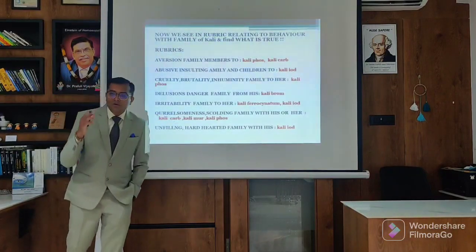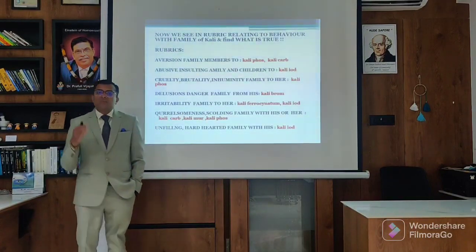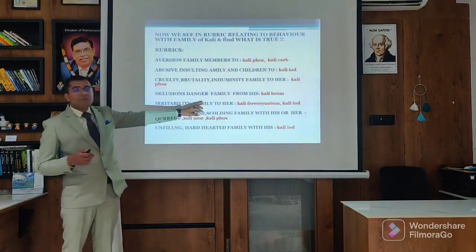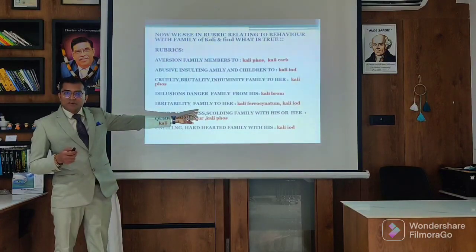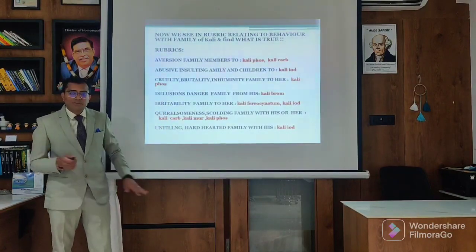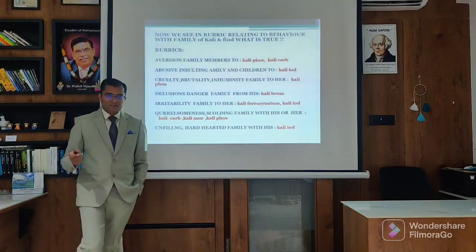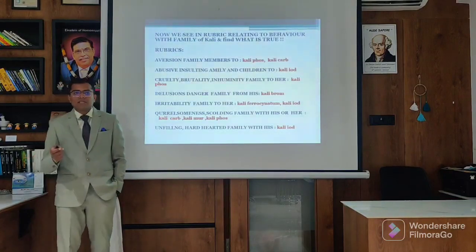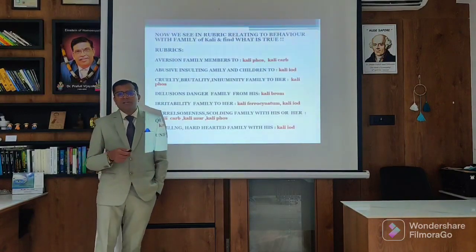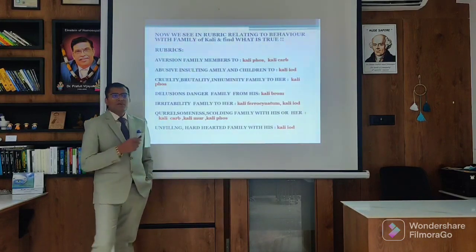All the halogens have the feeling of being deceived or betrayed from the relationship. That is why they have the feeling that the family is being betrayed and is going against them - the family is plotting against them. That is what they feel - that is the danger from the family. This is the very important aspect of Kali Brom. Mostly Kali Brom goes into psychiatric disorders. When you find a psychiatric person taking a lot of medicines and having very angry, quarrelsome behavior with the family, you can directly think of Kali Brom.